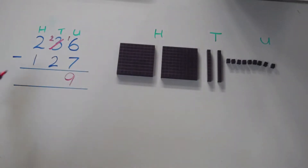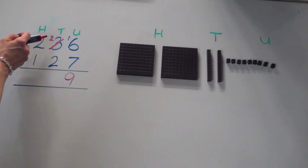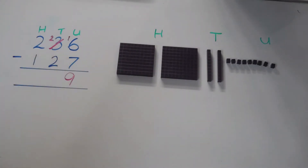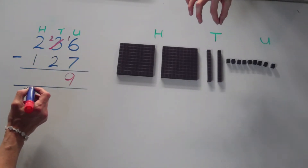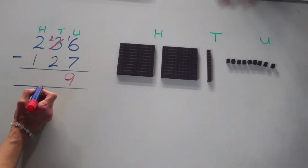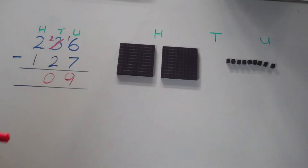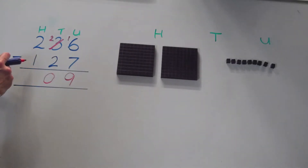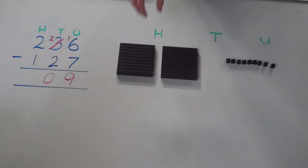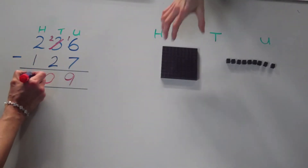Now we'll move on to the tens column. We now have two tens and we need to take away two tens. 2 take away 2 leaves us with 0. And finally, the hundreds column. We have two hundreds and we need to take away one hundred. One hundred from 200 leaves us with 100.